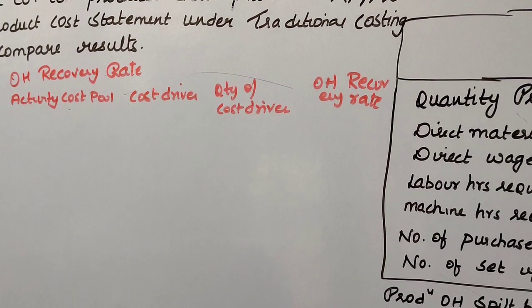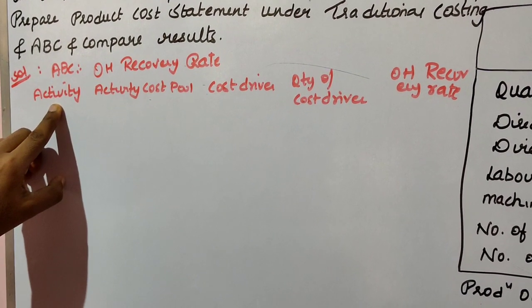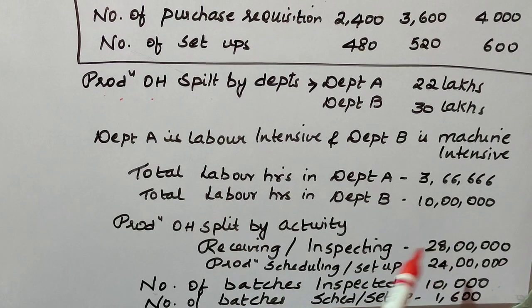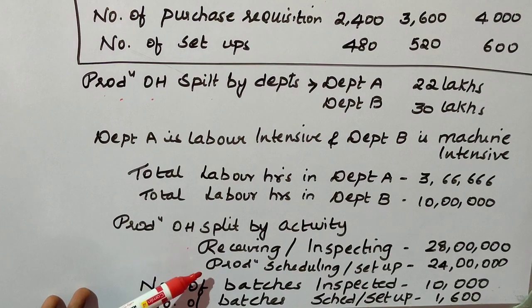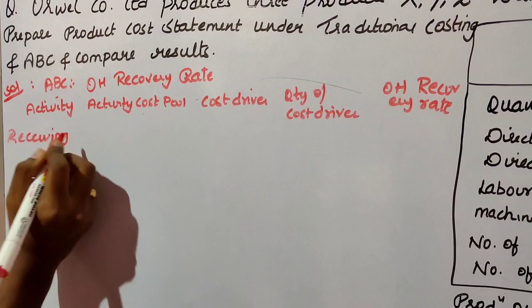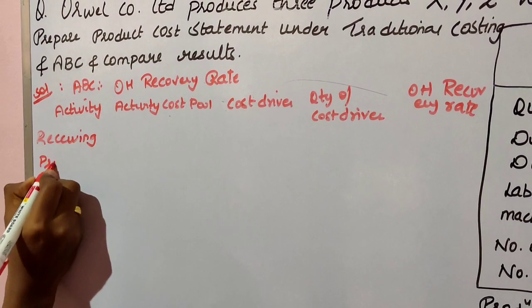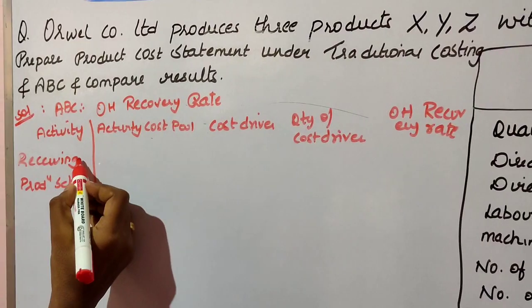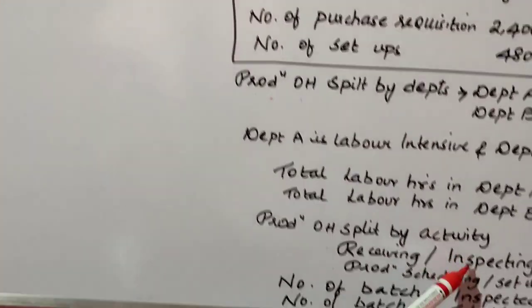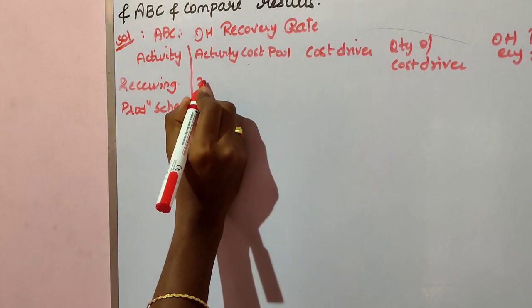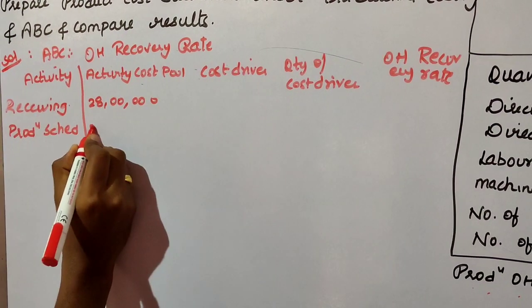In the question, production overhead is split up on the basis of activities. The activities given are: receiving or inspecting — ₹28 lakhs, and production scheduling or setup — ₹24 lakhs. These are the two activities and their respective activity cost pools: ₹28 lakhs for receiving/inspecting and ₹24 lakhs for production scheduling.